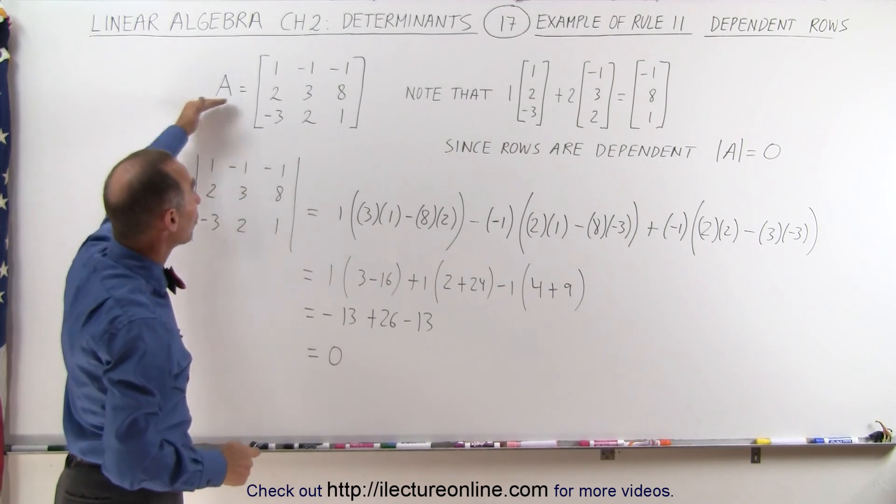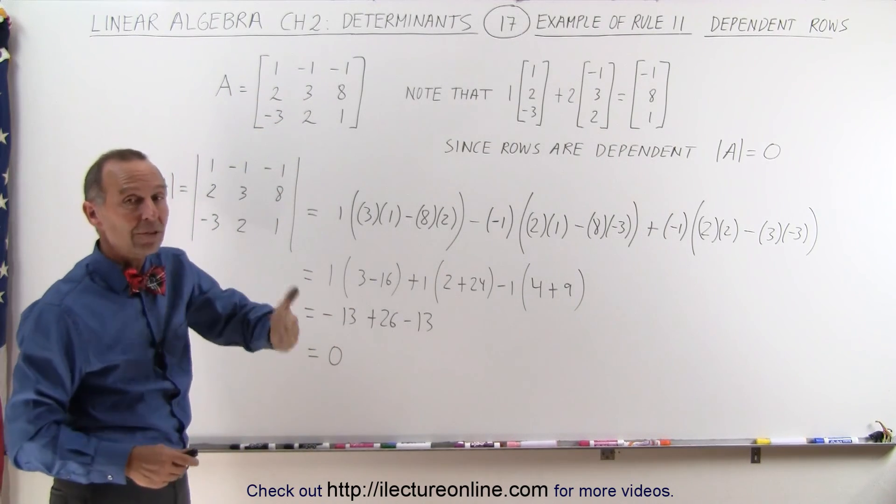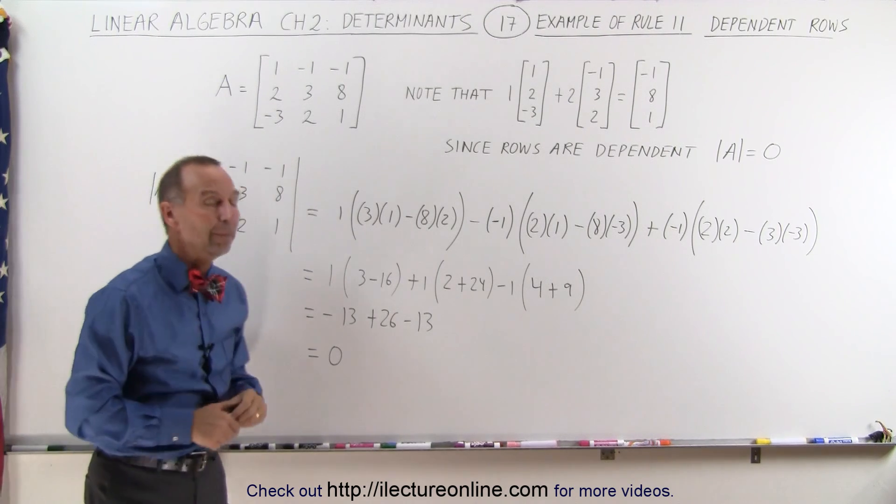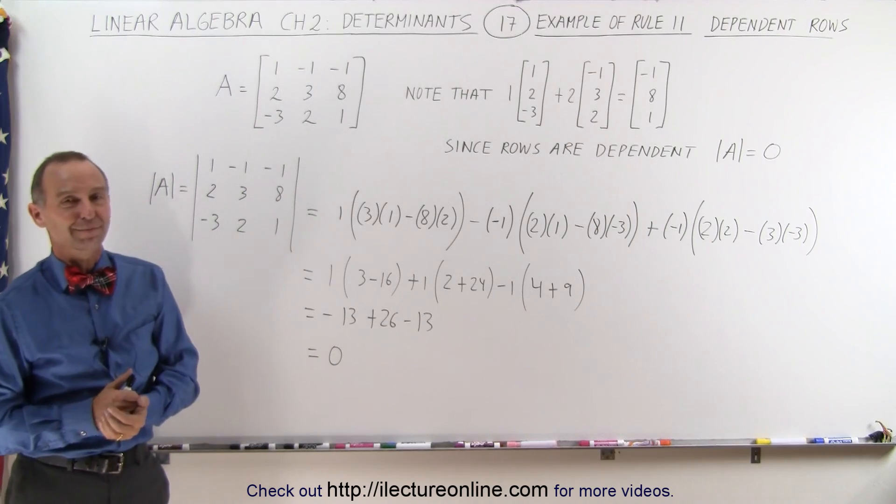Which means that if the rows are dependent in a matrix, then when we take the determinant of that matrix, the determinant will equal 0, and that's rule number 11.